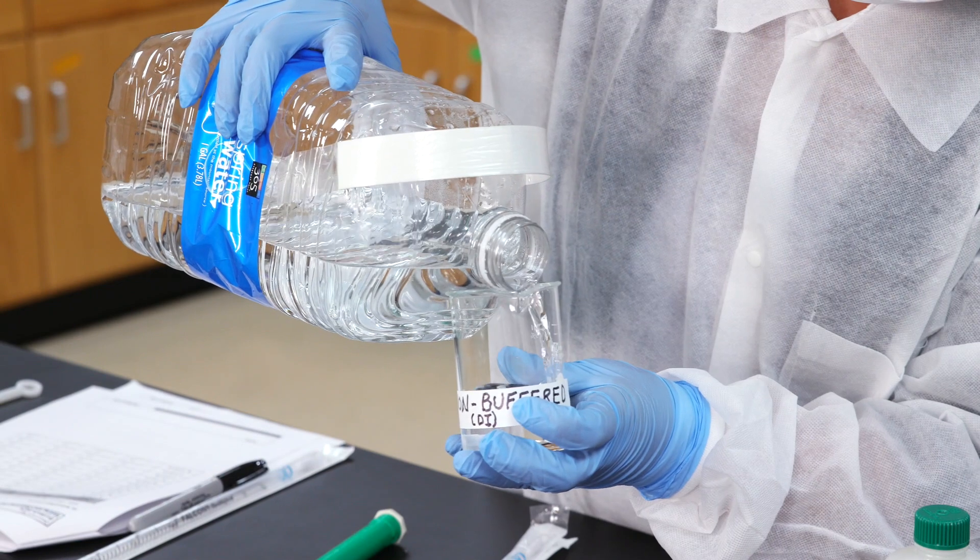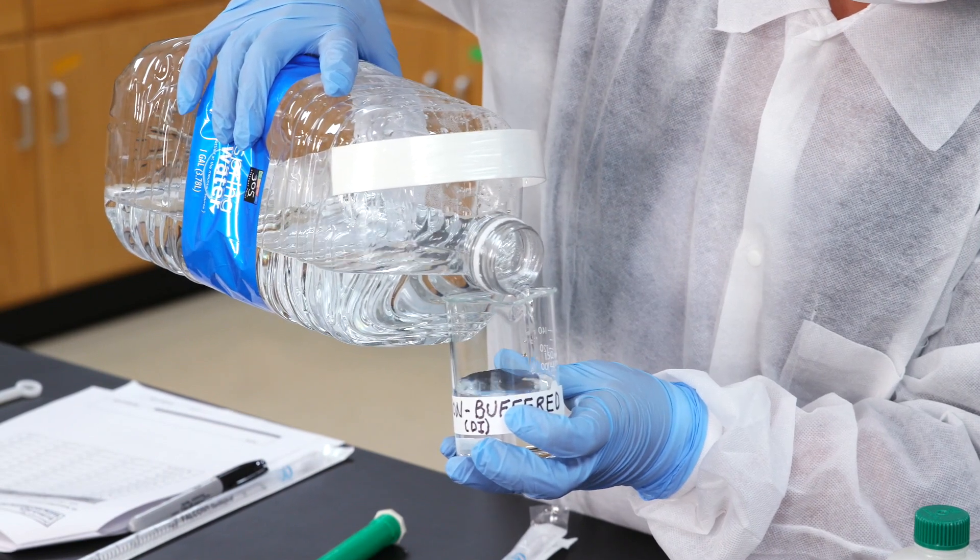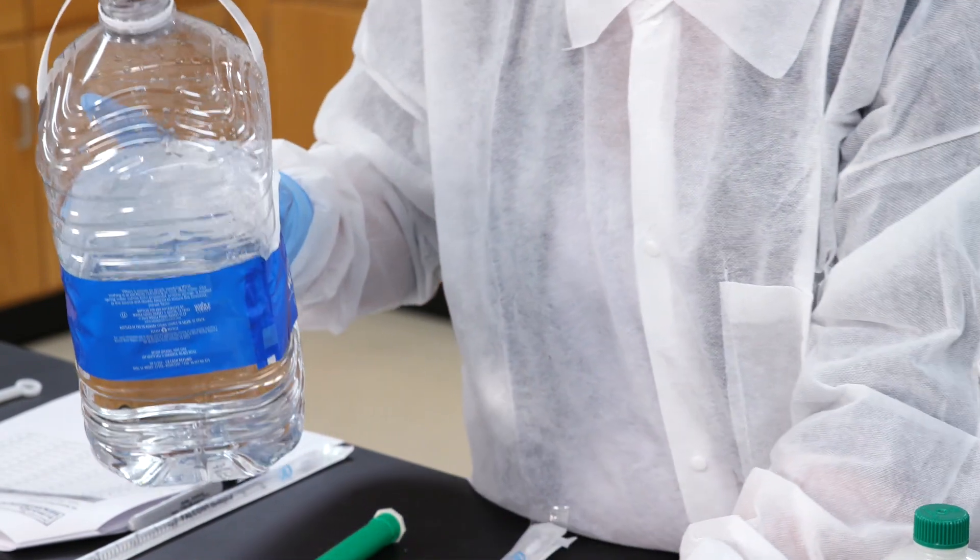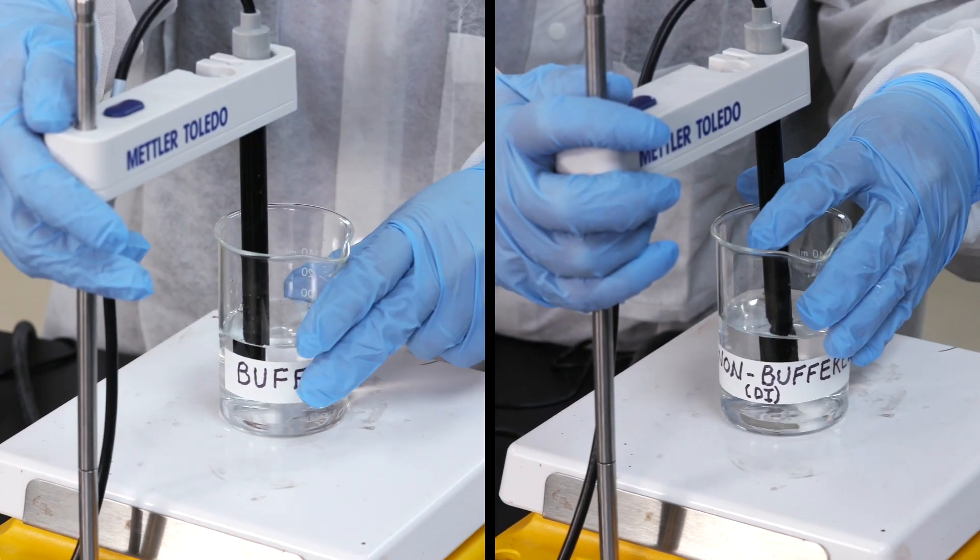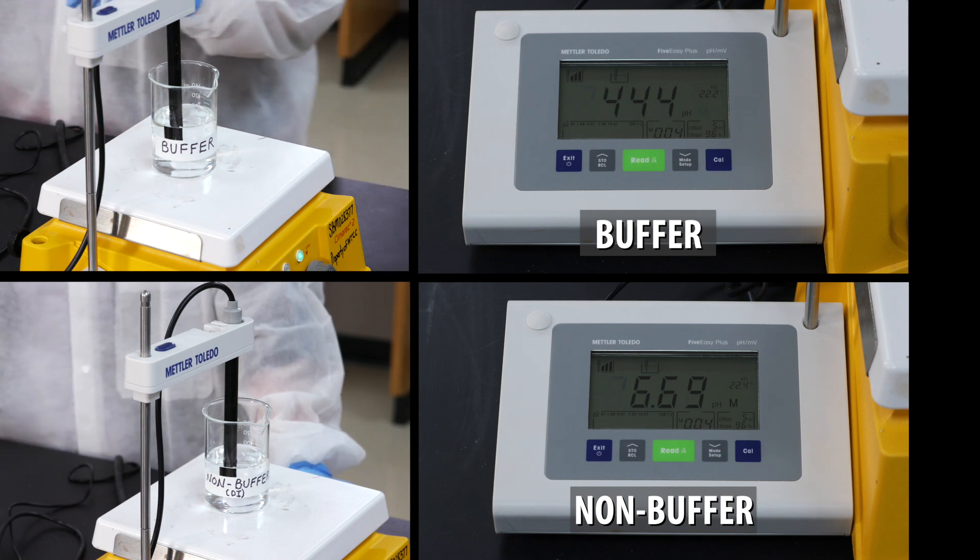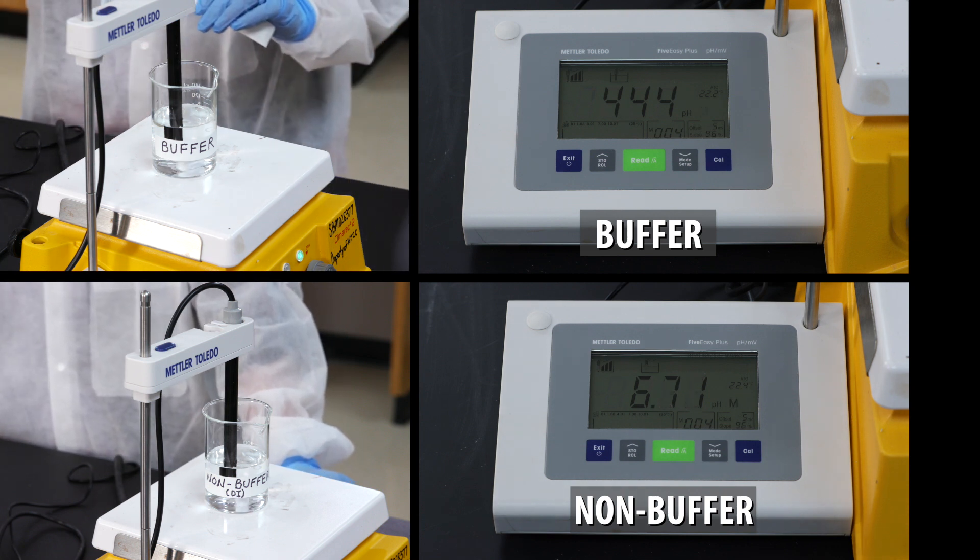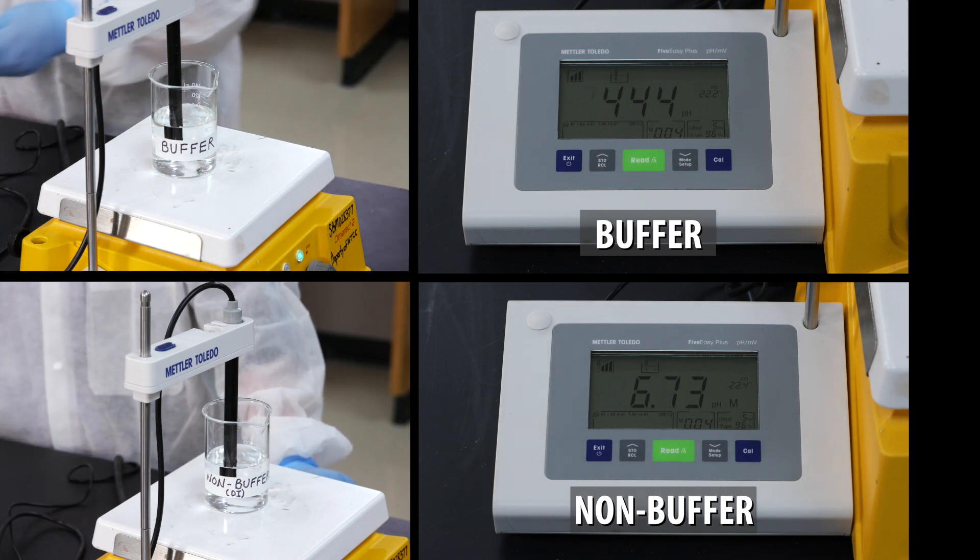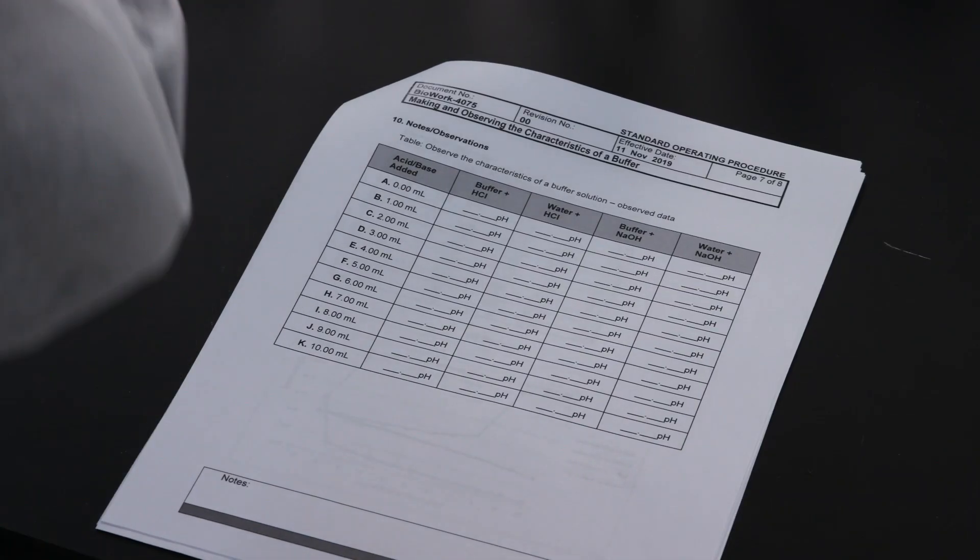Over here, we have a similar setup, but this beaker contains our control, the deionized water. Insert a pH meter probe into both beakers and let's take our initial pH readings. The buffer is 4.44 and the deionized water is 6.73. We'll need to record these readings in our lab notebook.